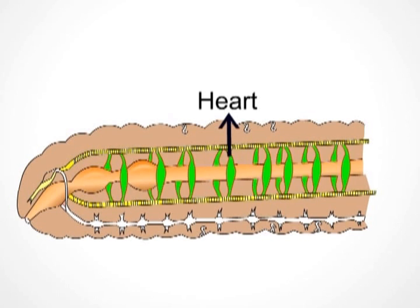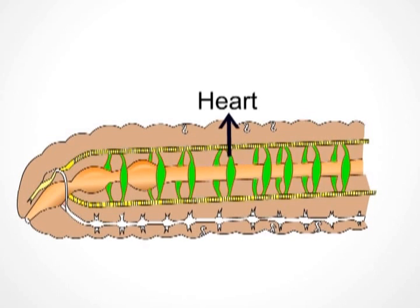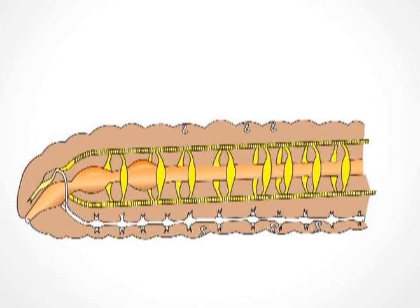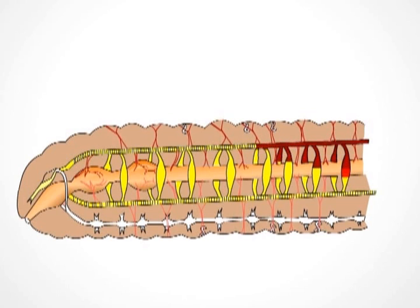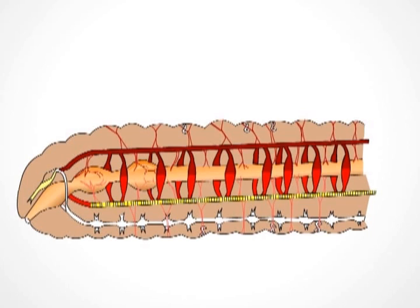In earthworm, eight pairs of hearts are laterally present in the sixth to thirteenth segments, connecting the dorsal blood vessel with the ventral blood vessel. In circulation, the dorsal blood vessel collects blood from organs via three pairs of small blood vessels. Blood passes from the posterior to the anterior side in the dorsal blood vessel, then enters the ventral blood vessel, which supplies blood to different organs from the anterior end to the posterior end.